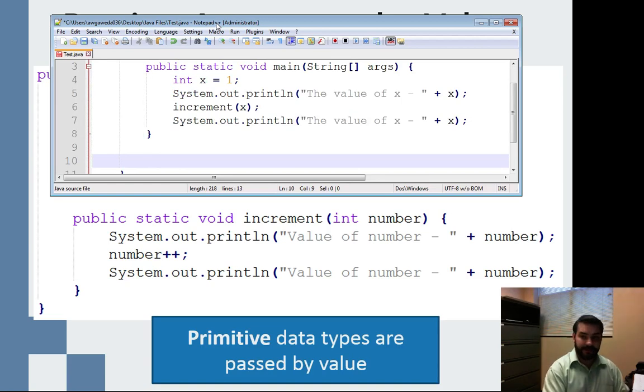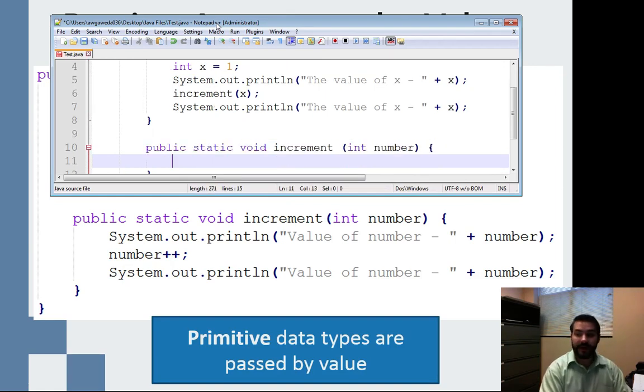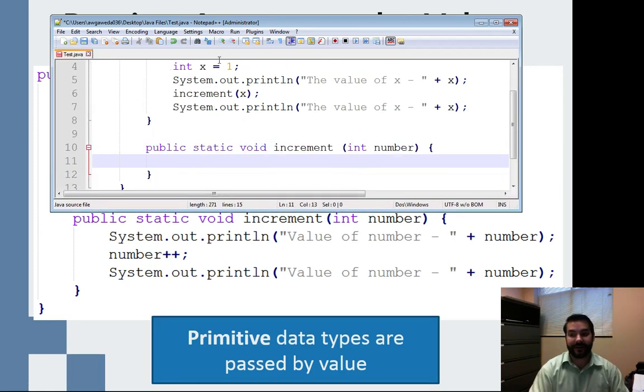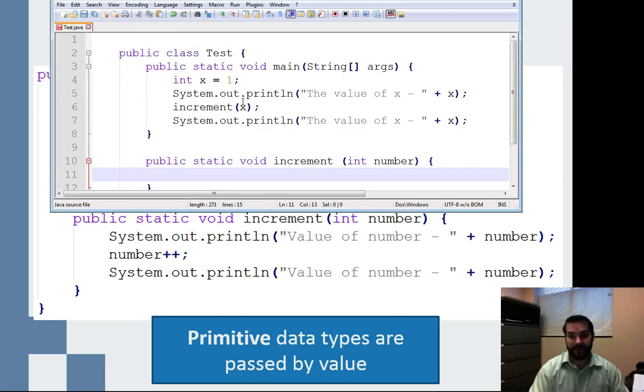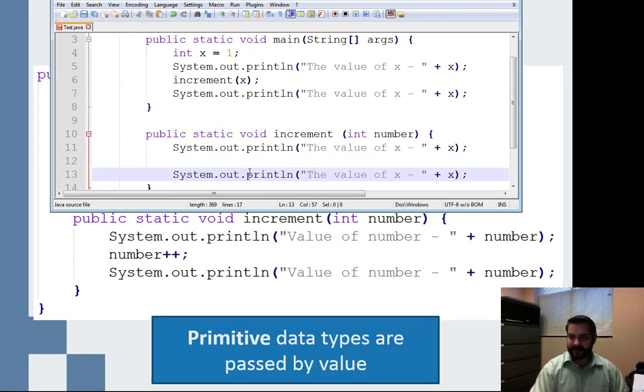So I come down here. I normally put it after my main method or before. It really does not matter. Public static void increment int number. Again, like I said, I don't care what it was called outside of my method. I don't care that it's called x here. Inside my method, I'm going to call you number. Don't care what you were called. You are number in my world. And the same kind of thing. I'm going to change this. I'm going to say that this is now number.